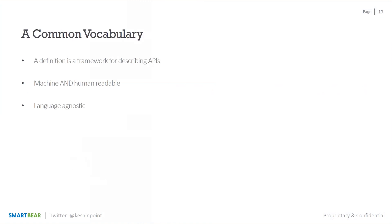We need a common vocabulary for the modern REST API world, and that is the definition. The definition has to be machine and human readable — meaning both humans and machines should be able to understand it. Humans understand it directly, and machines and tooling ecosystems should be able to integrate with it. Finally, definitions have to be language agnostic — no restrictions on technology stack.